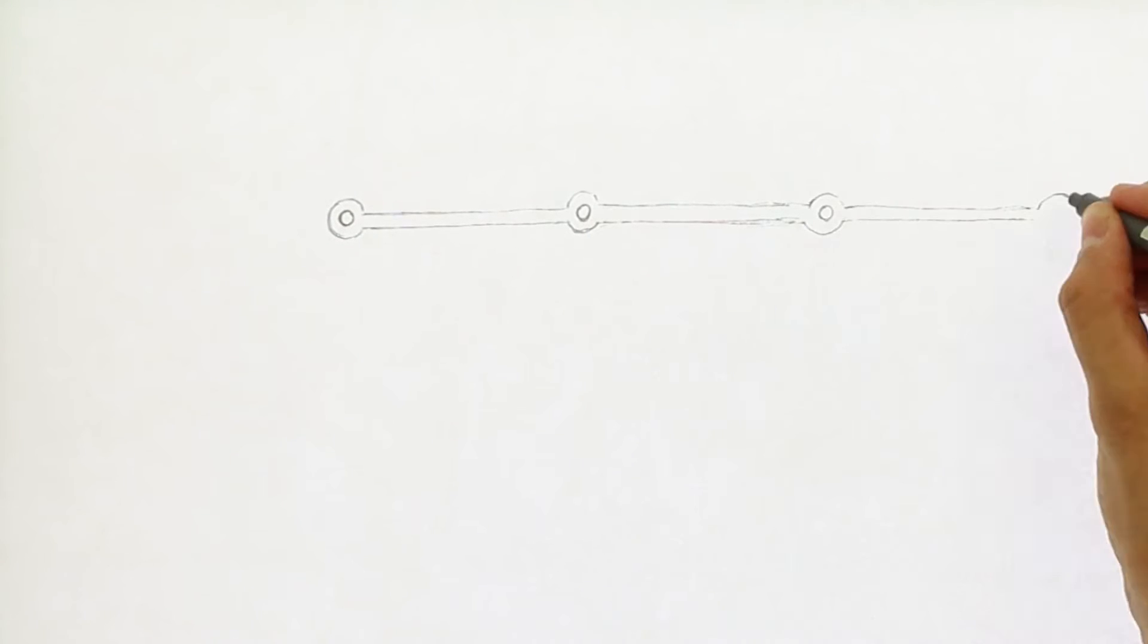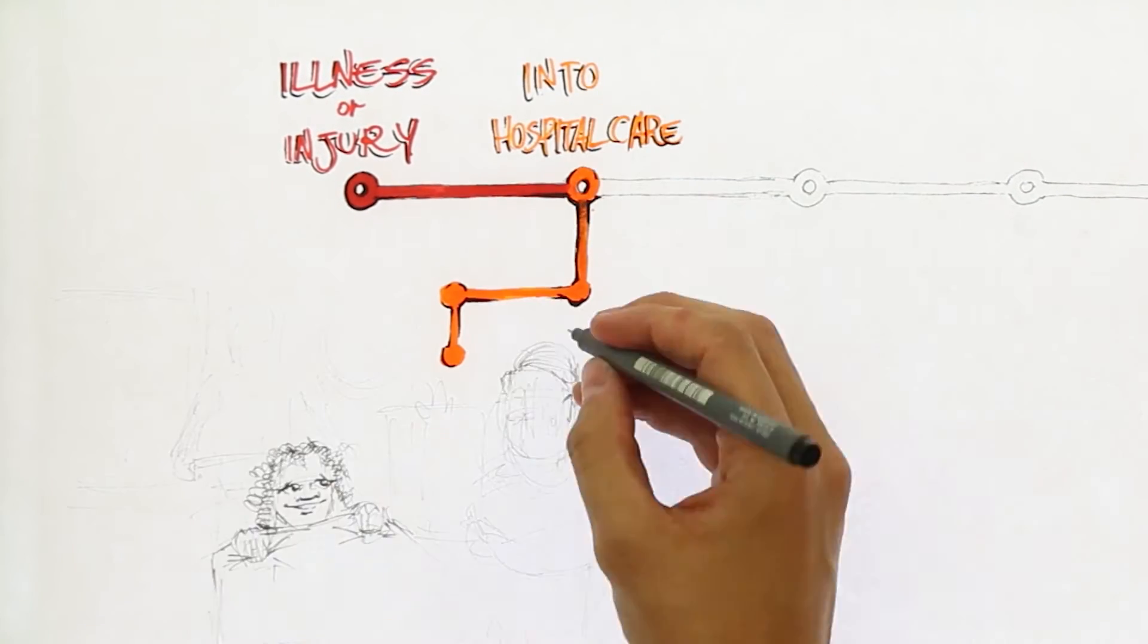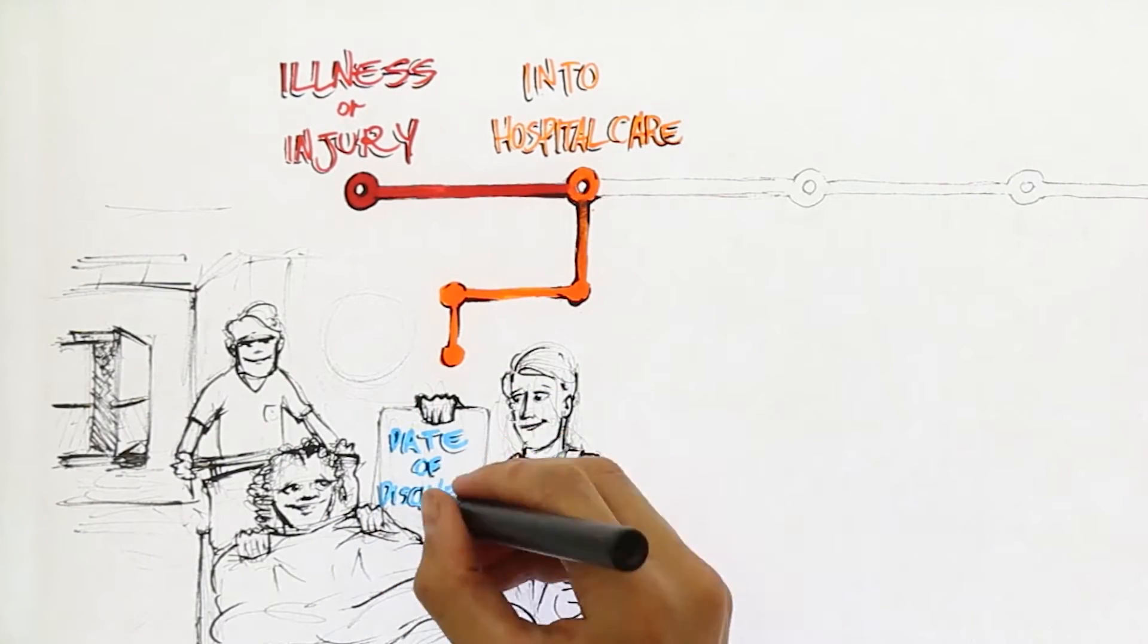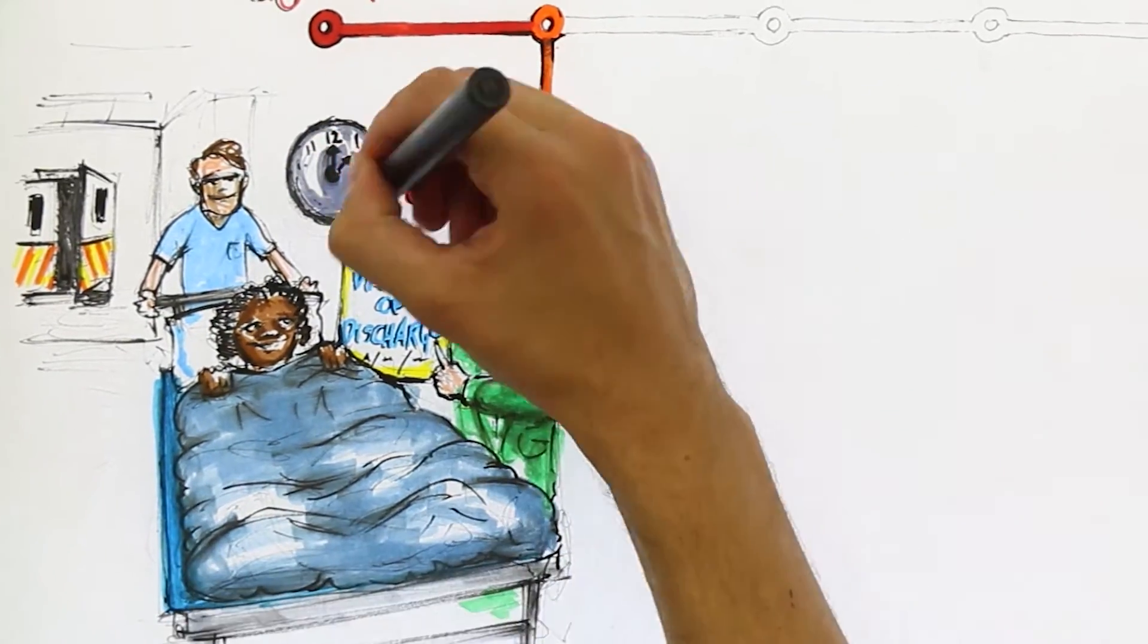Hospitals try to work to a timetable. Right from admission, patients should be given an expected date of discharge and wherever possible, should be on their way home before 1pm on that date.